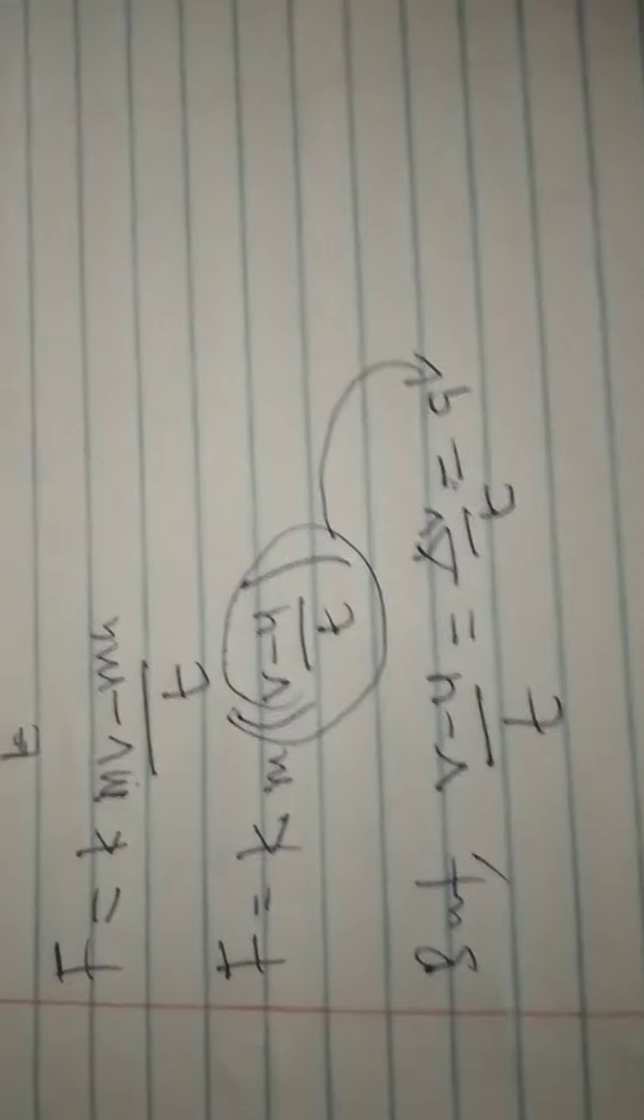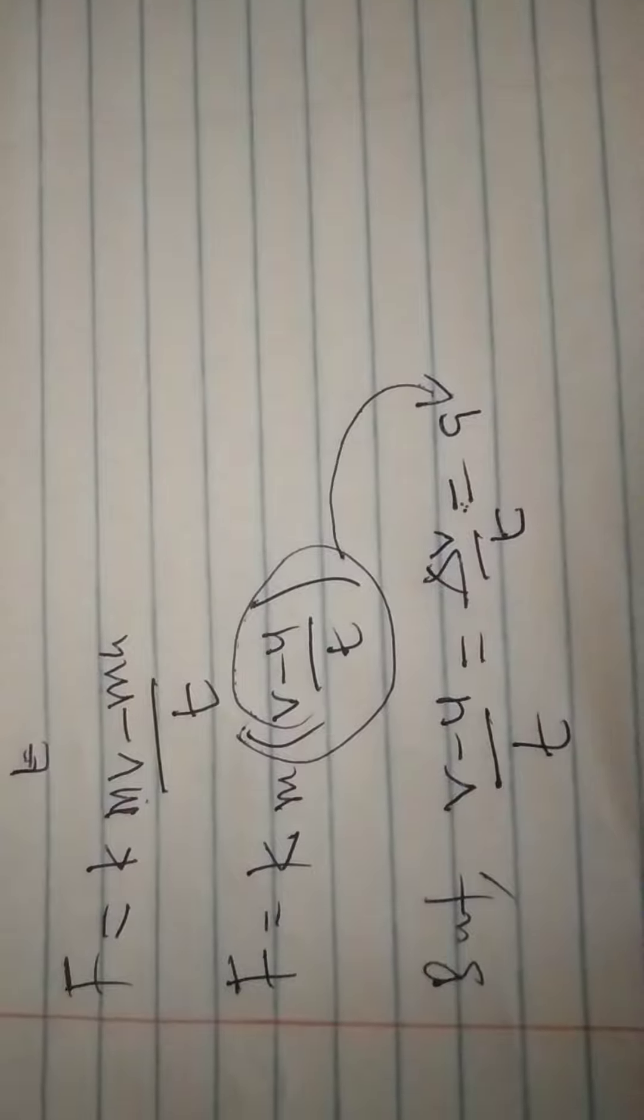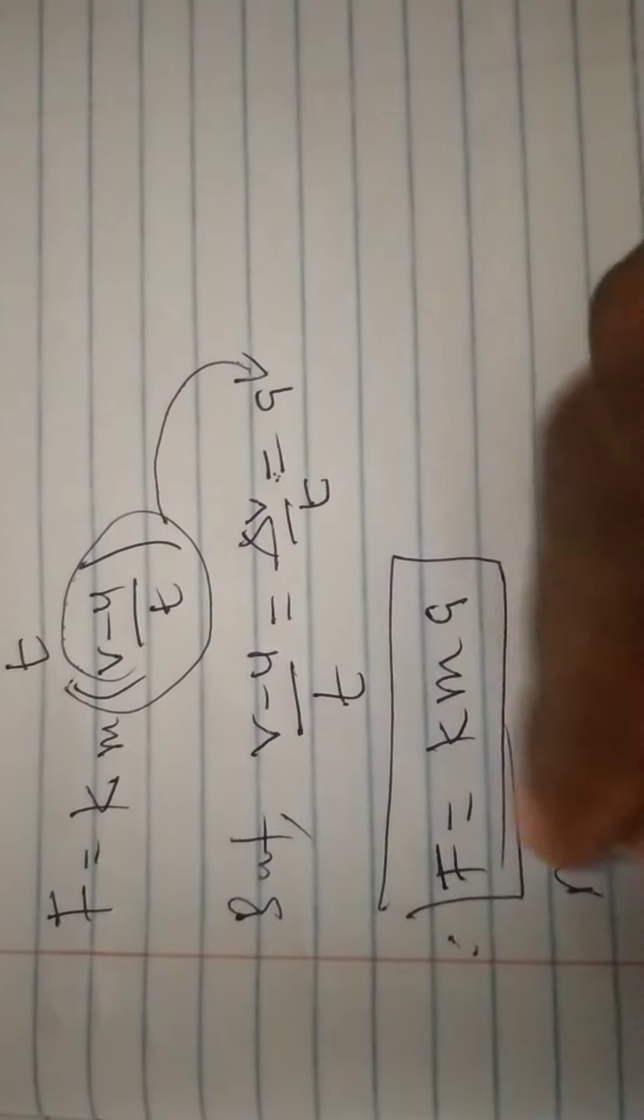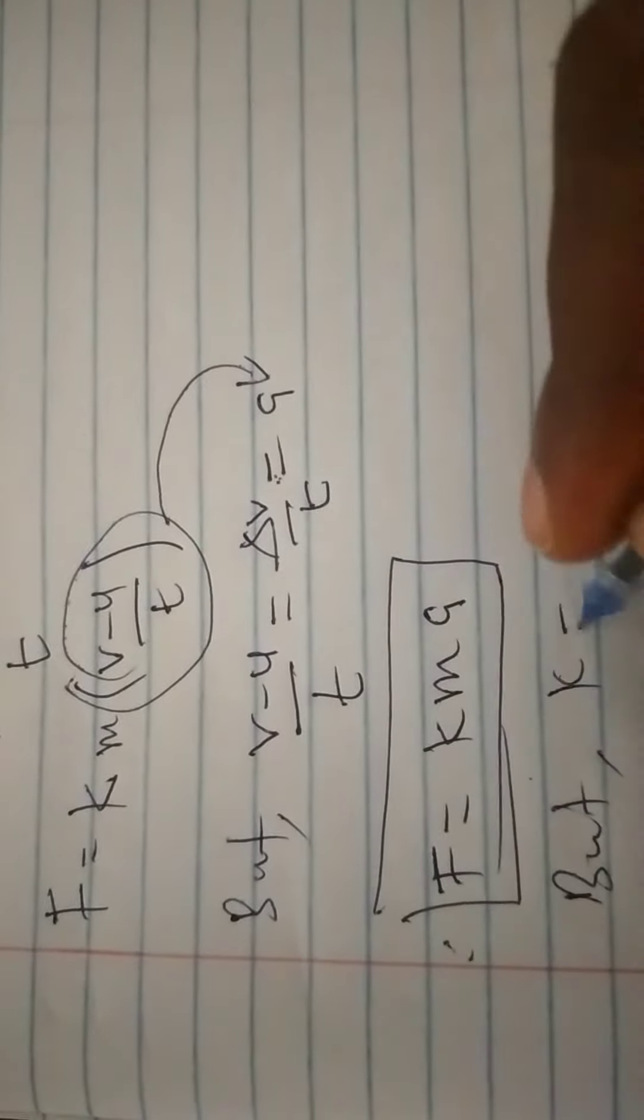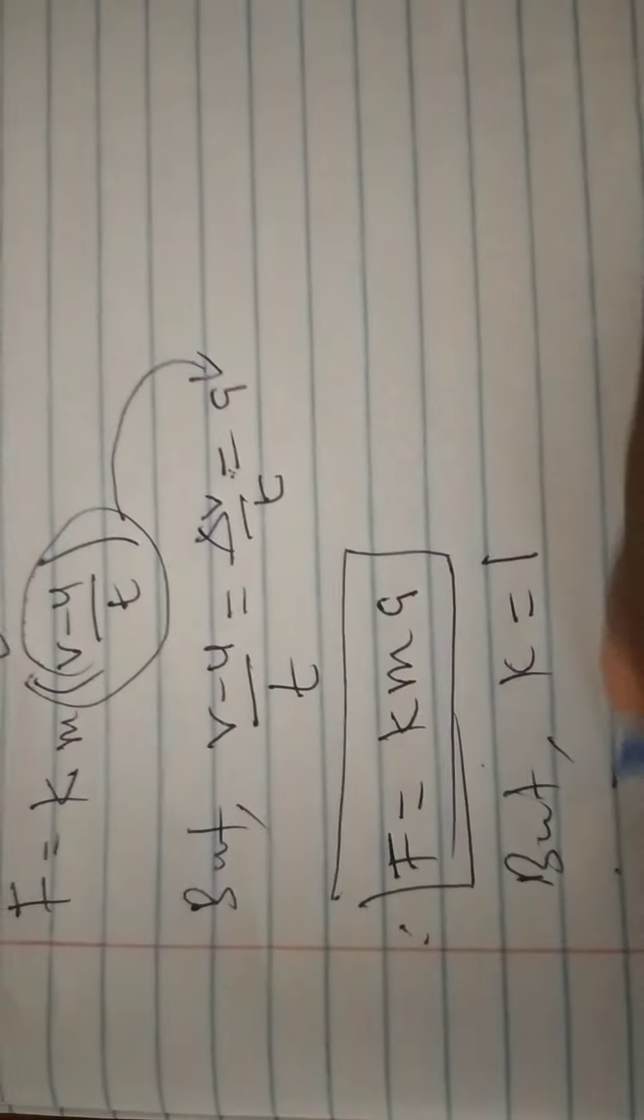So that we have f is equal to k times m times a. This is the expression that we are arriving at, but our constant k is equal to 1, therefore f becomes equal to mass times acceleration.